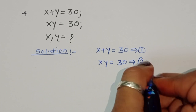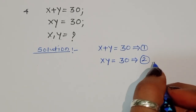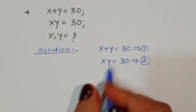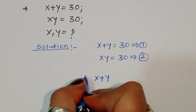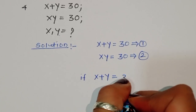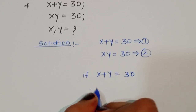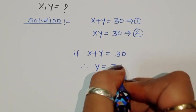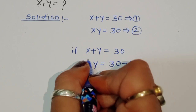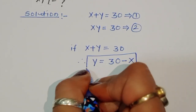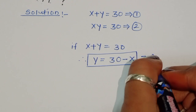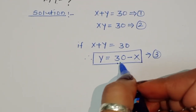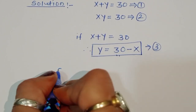Now, from equation 1, x plus y equals 30. Therefore, y is equal to 30 minus x. This is the value of y, and we call this equation number 3. Now we have to substitute this value from equation 3 into equation 2.